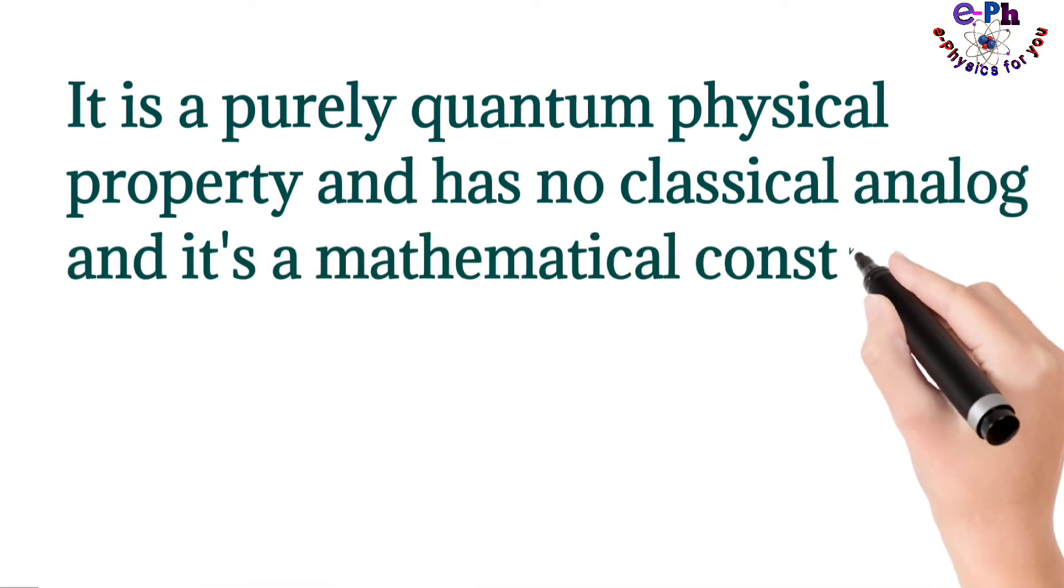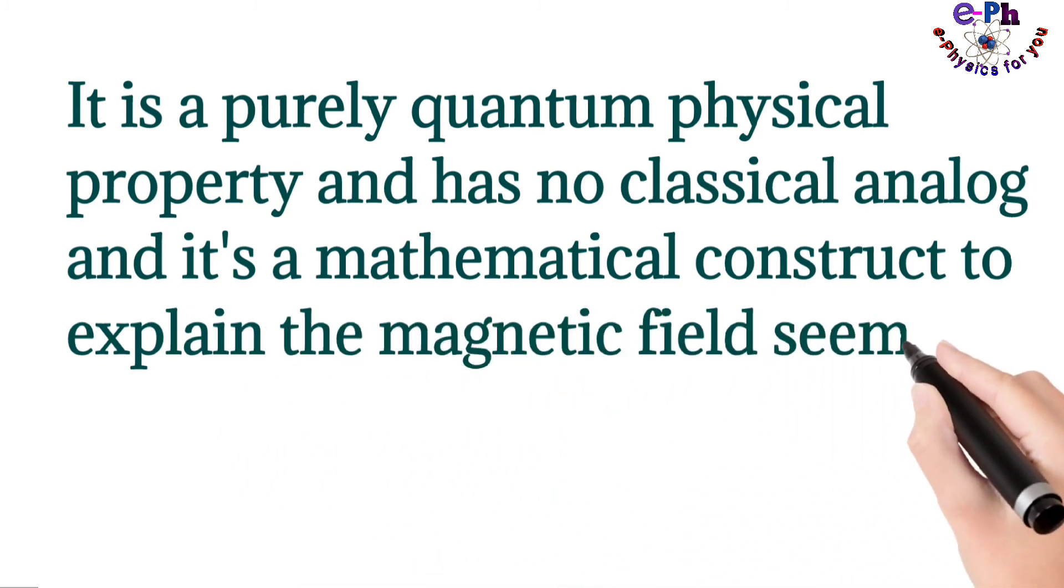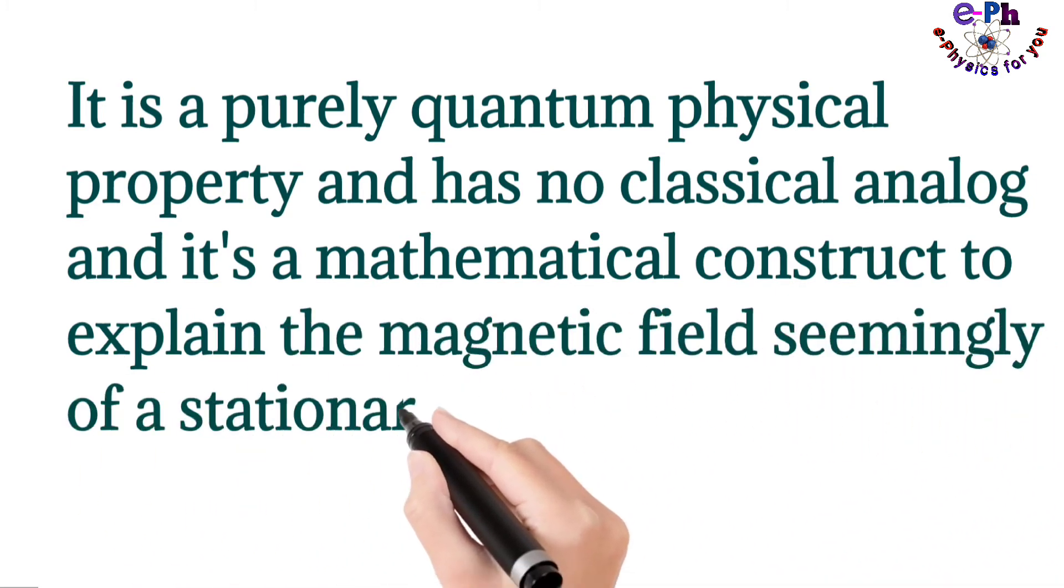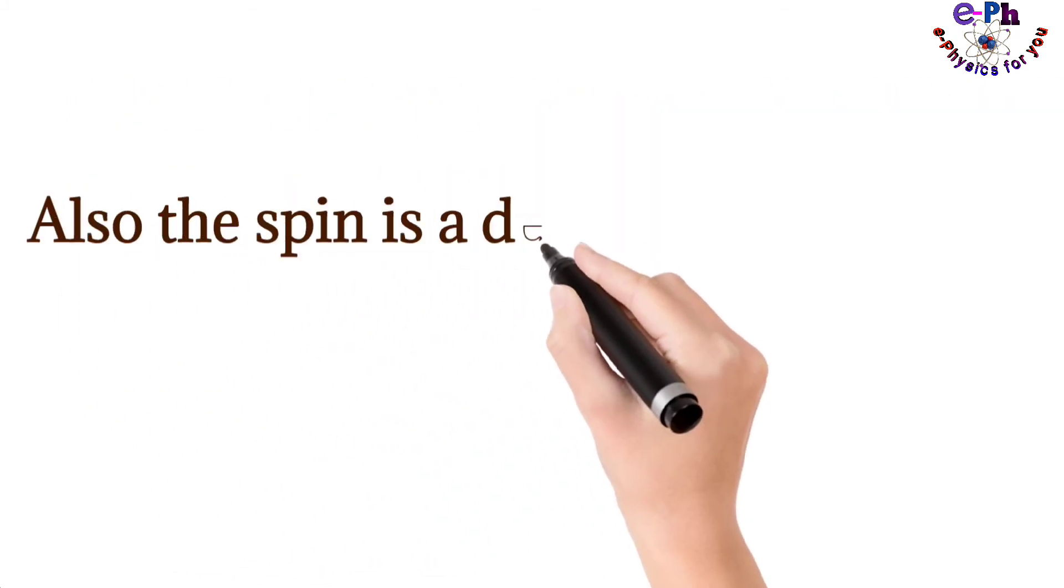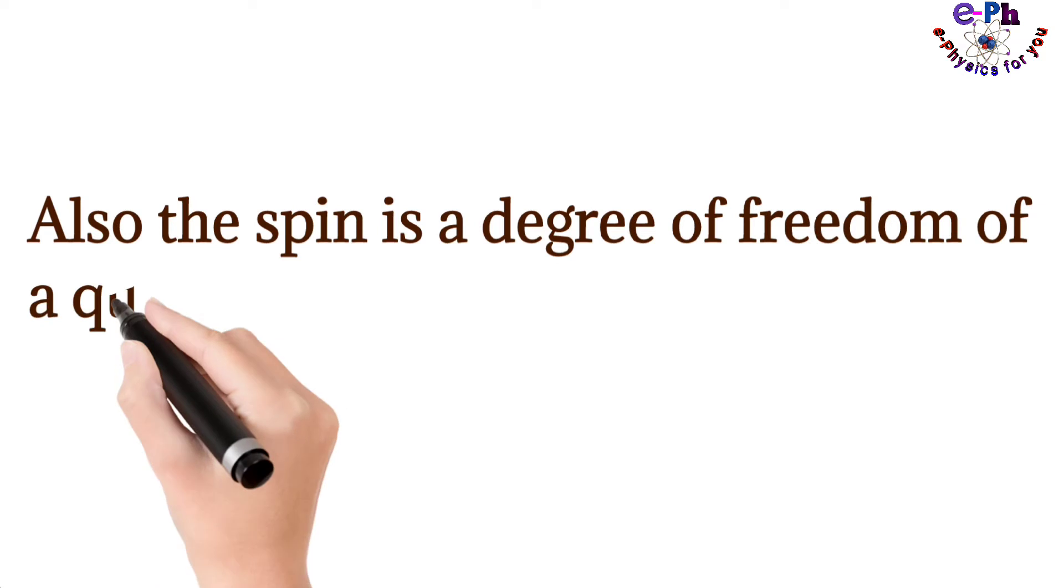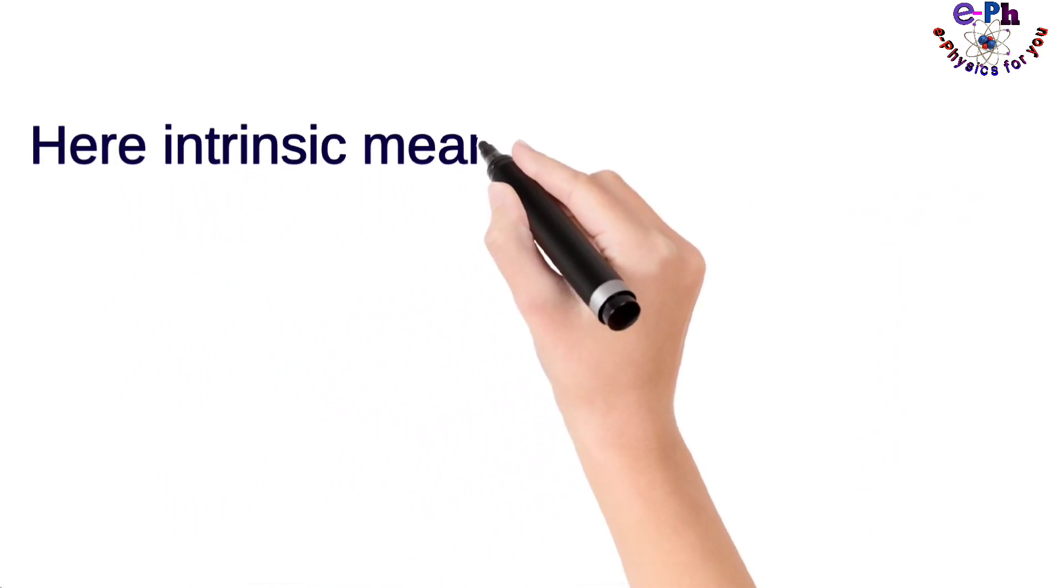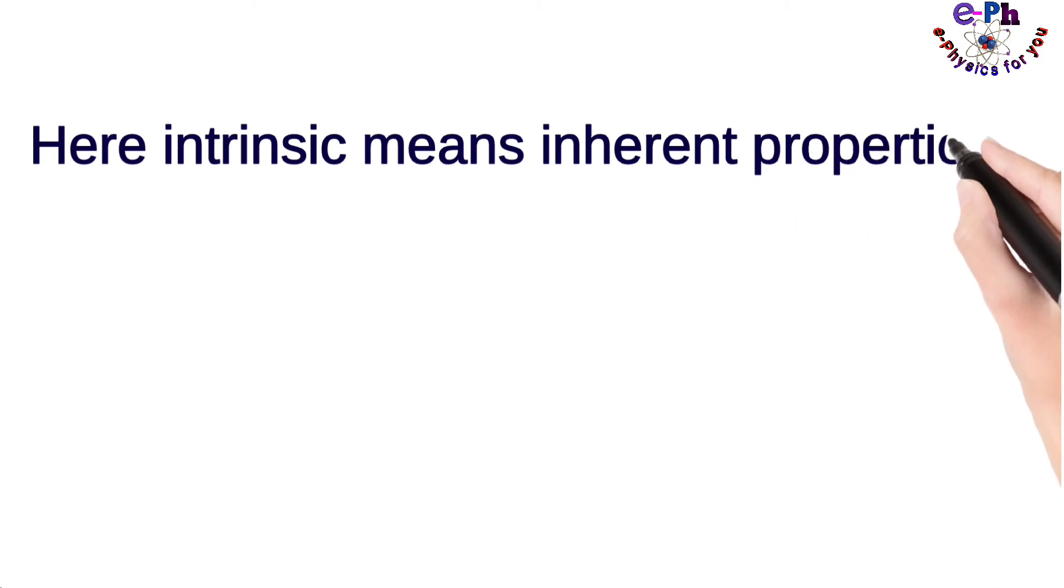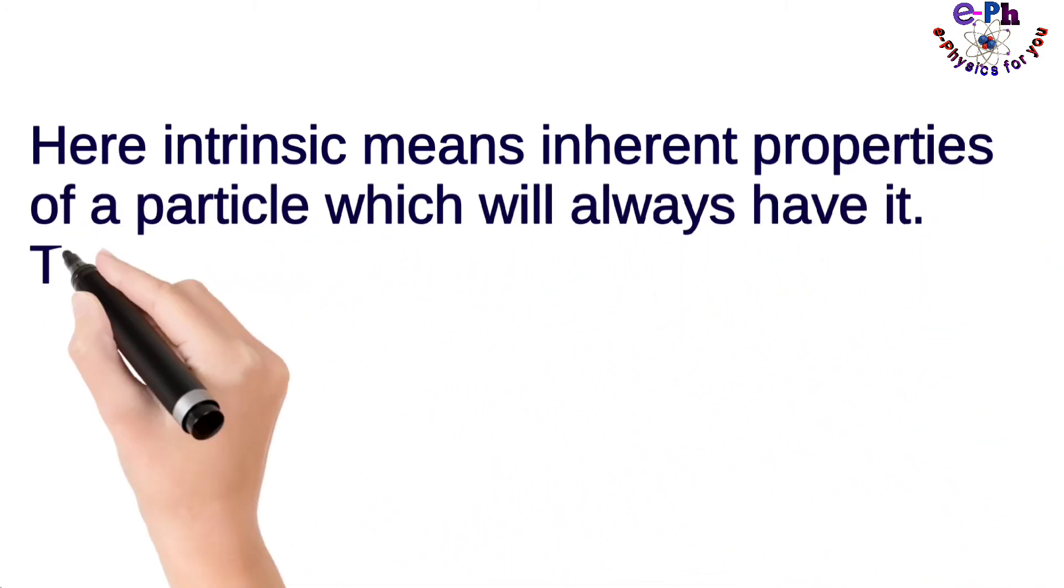It's a mathematical construct to explain the magnetic field seemingly of a stationary electron. Also, the spin is a degree of freedom of a quantum particle. Here intrinsic means inherent property of a particle which will always have it.